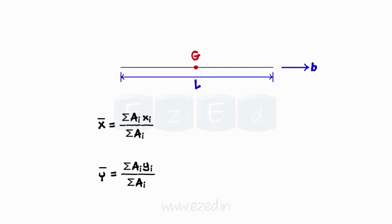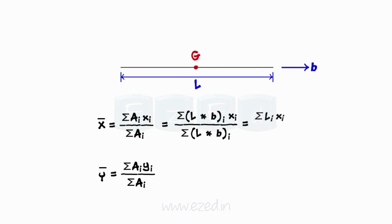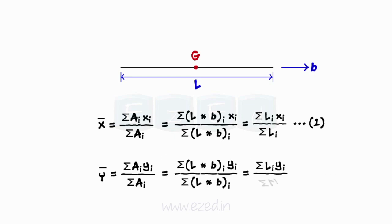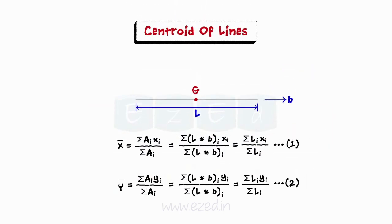We will now recall the relations used to find the coordinates of centroid of a plane area. Thus, we can derive a relation for x-bar, the x-coordinate of the centroid of lines, in terms of the individual lengths of the parts and their respective x-coordinates. Similarly, we derive the relation for the y-coordinate of the centroid y-bar. Relations 1 and 2 are used to locate the centroid G of a wire bend, having coordinates x-bar, y-bar.